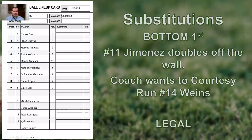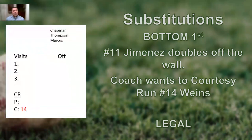Wings is an eligible sub. Marcus is our catcher and he can certainly be courtesy run for. On the lineup card template, we put 14 — Wings' number — next to the C because he is courtesy running for the catcher.